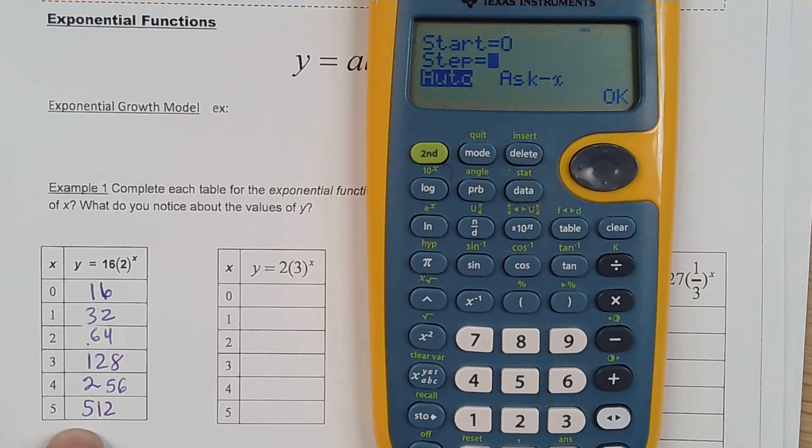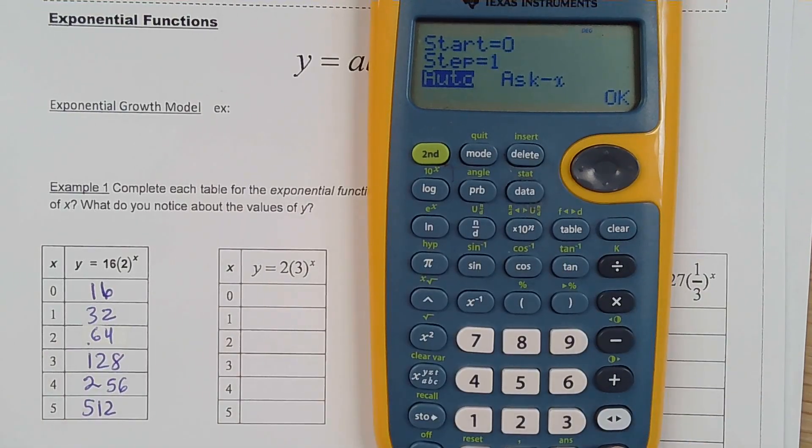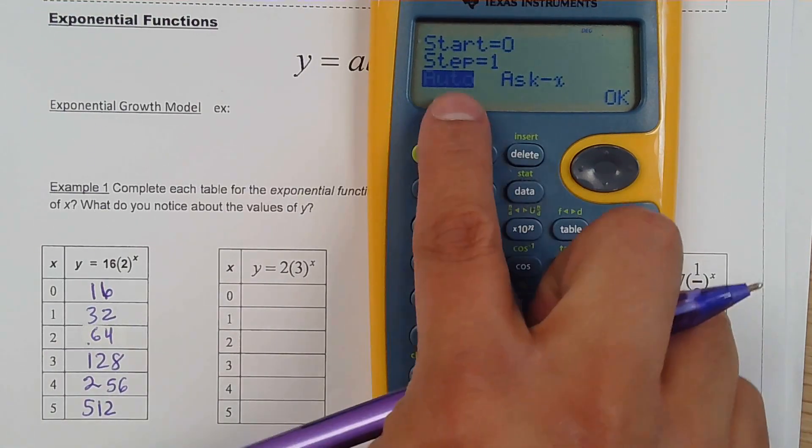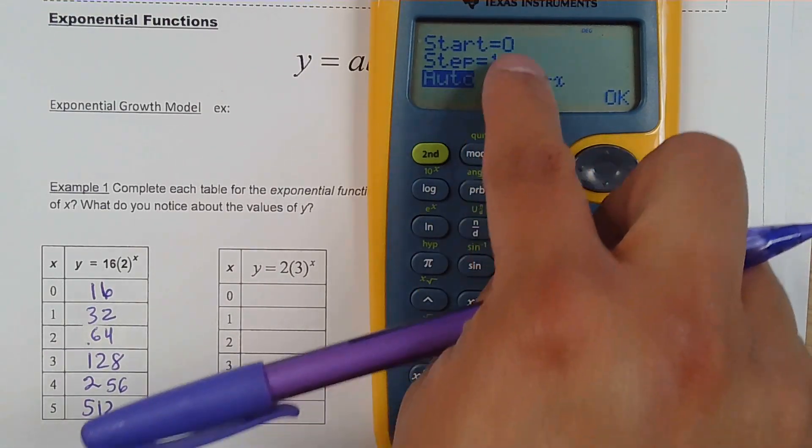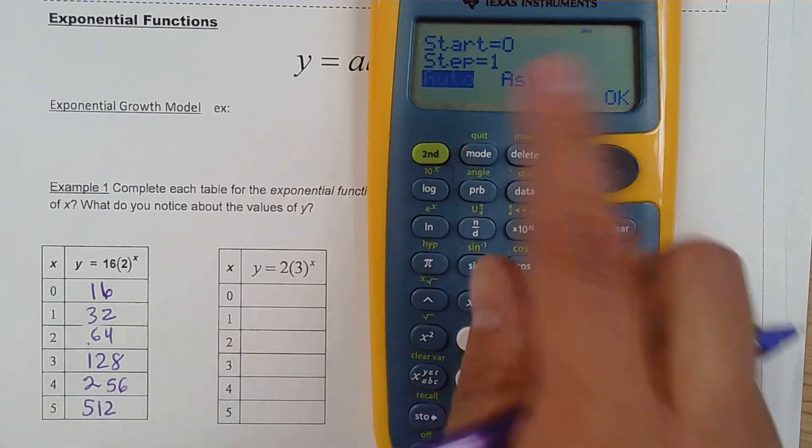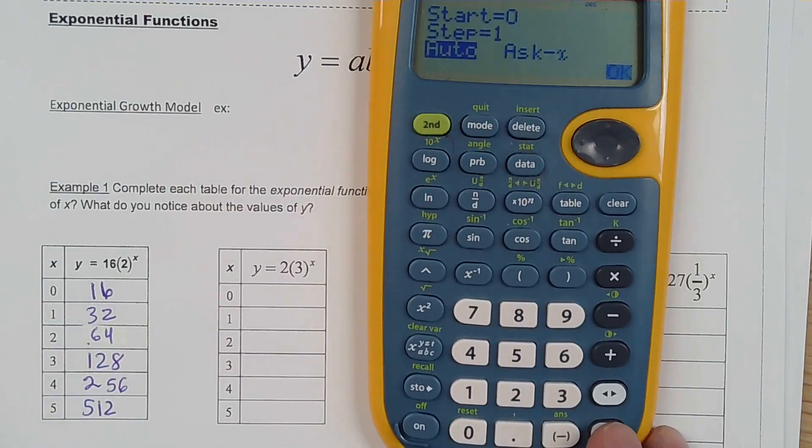But in this case it's going by 1. So I just leave it like that. Press enter. Auto. You want auto response after I generate. Started from 0. You just say yes. Just press enter and press enter.